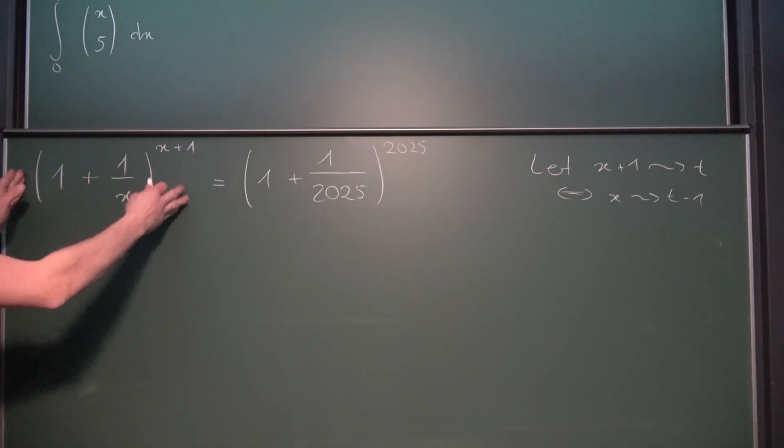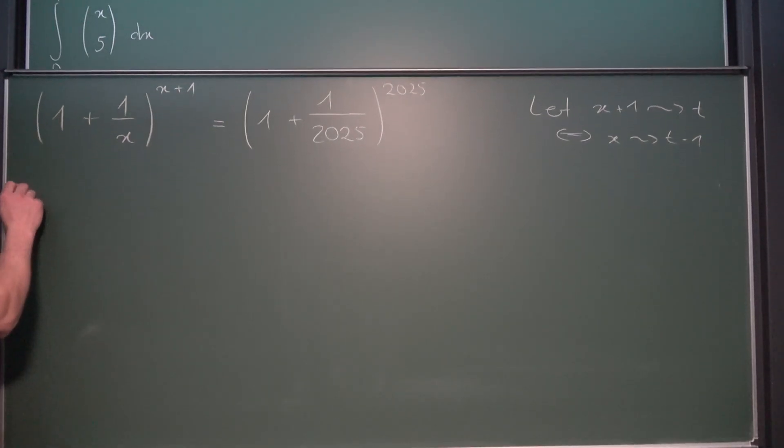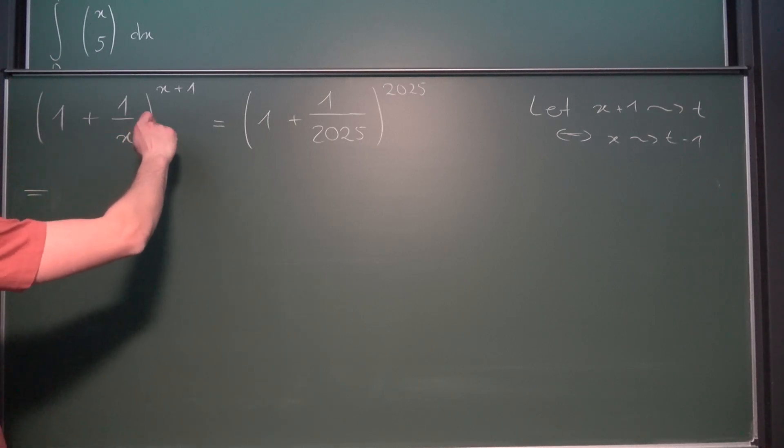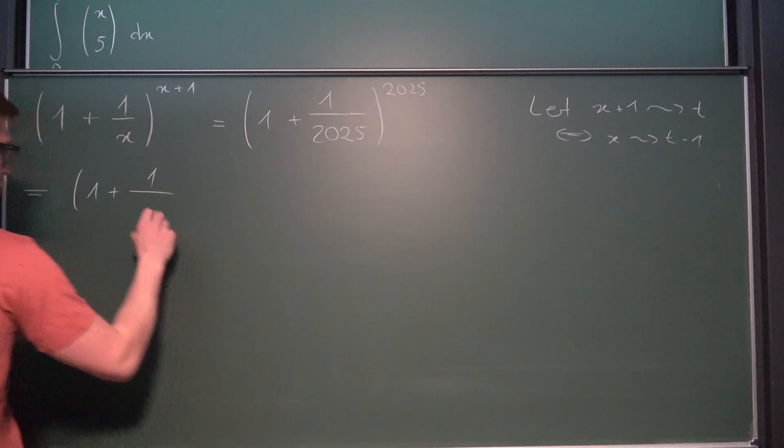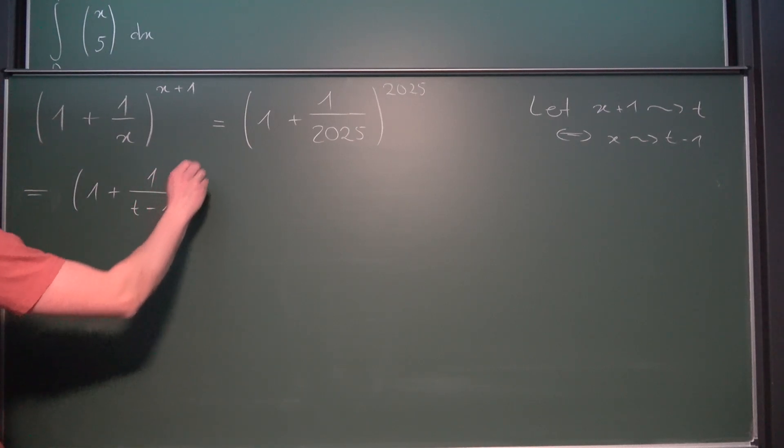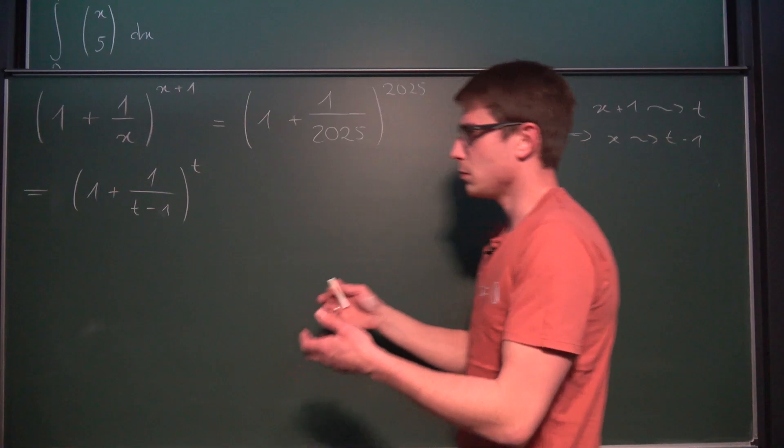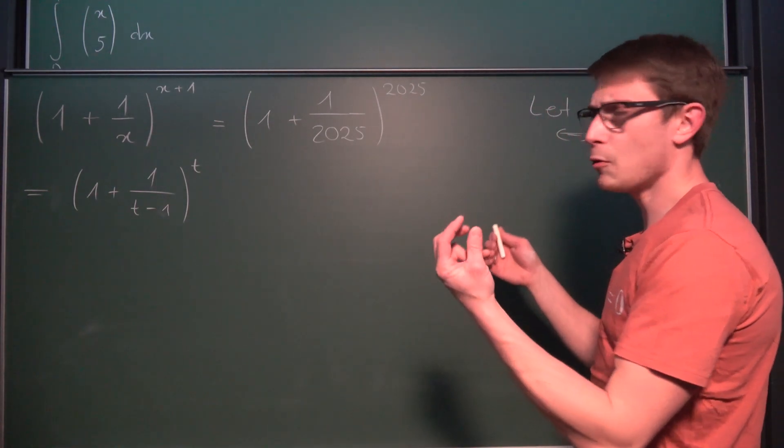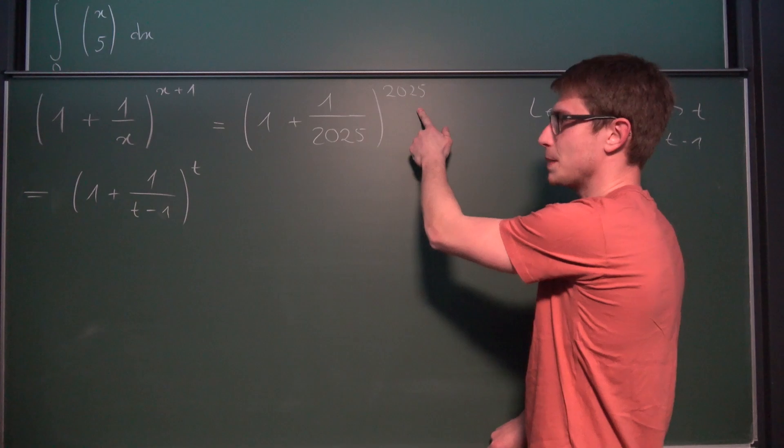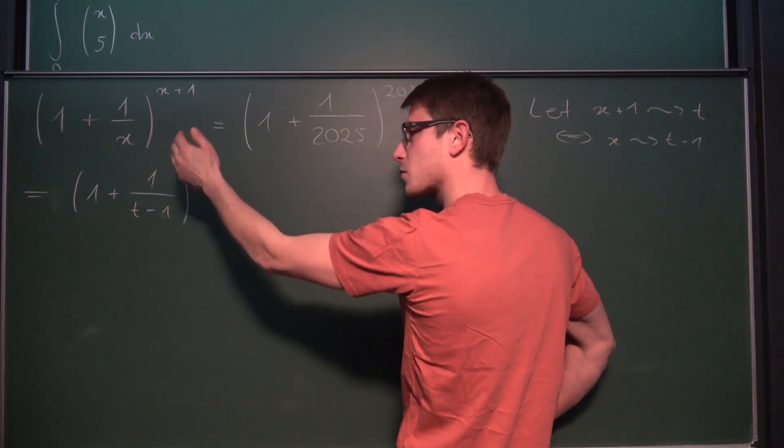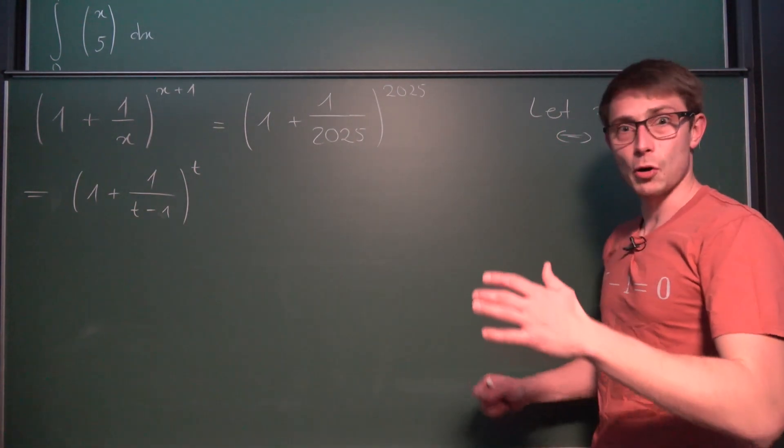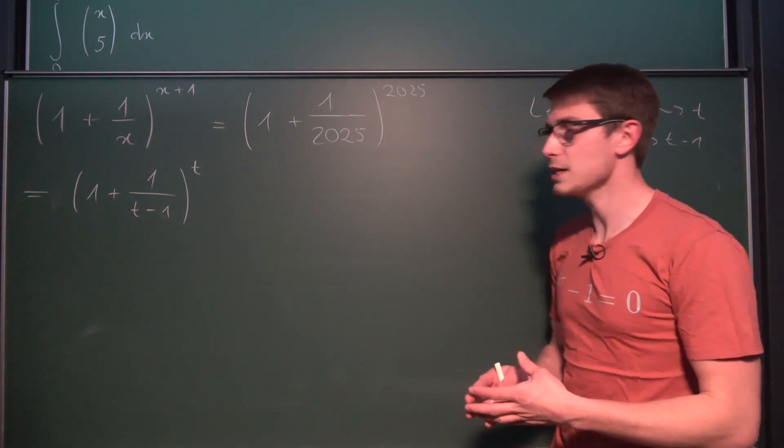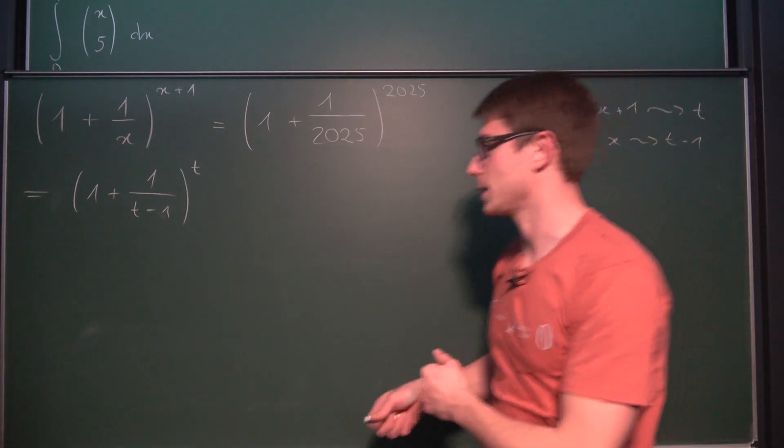Now we can plug all of this in here and move on with the algebra. We are going to end up with 1 plus 1 over t minus 1, which is the same as x, to the tth power. Now what can we do next? We could basically compare the exponent right here, but we are still not good to go because we still have this part down here which doesn't fit. So the next thing we could do is add our fractions together.